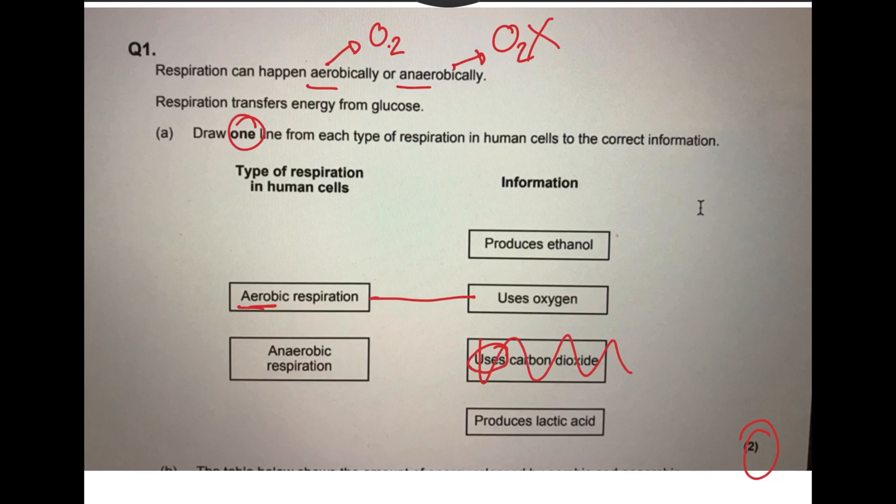It doesn't produce ethanol. Remember, ethanol is alcohol. It would be a bit crazy if our bodies produced alcohol. This is what yeast produce during respiration. So anaerobic respiration produces lactic acid, and this is what's responsible for things like cramps when you're working really hard in your body. It's a poison.